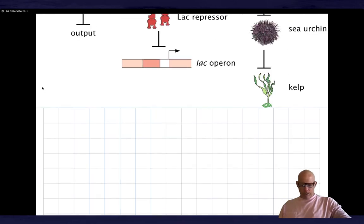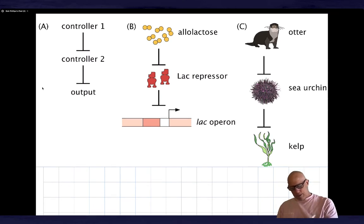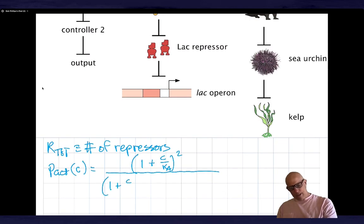We're going to try to mathematicize this. I want to talk about r_tot as the total number of repressors, and I'm going to say that p_active of c is equal to... I'm going to derive this in an upcoming vignette.